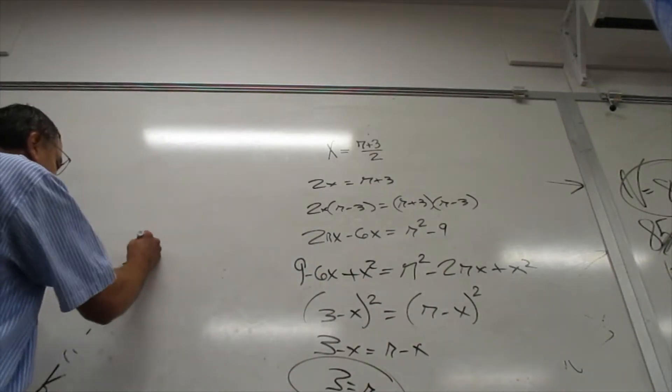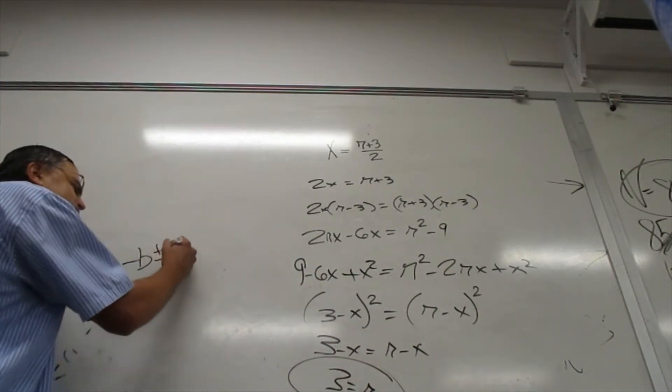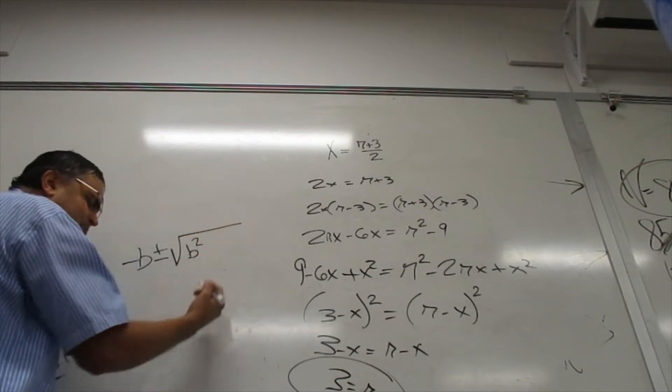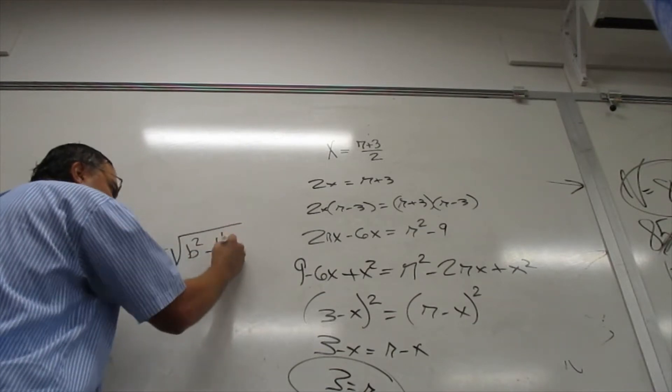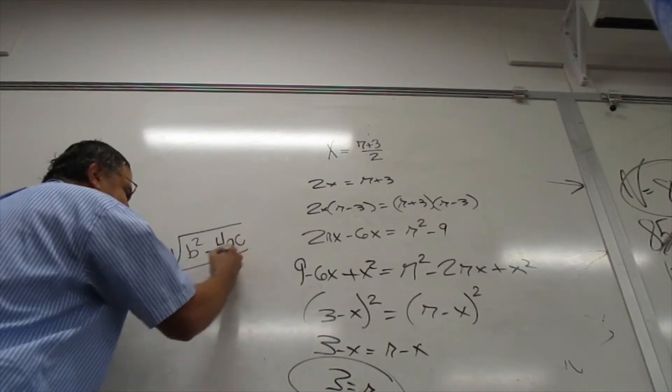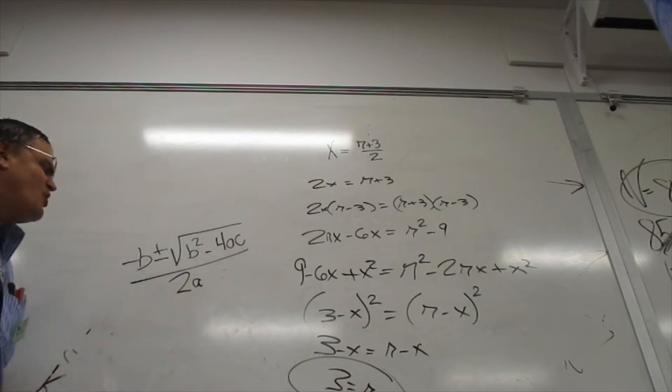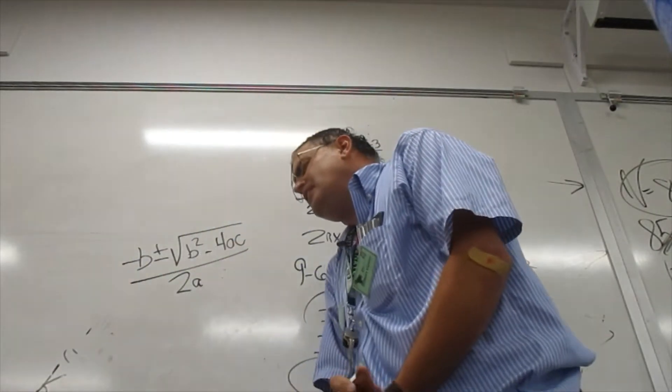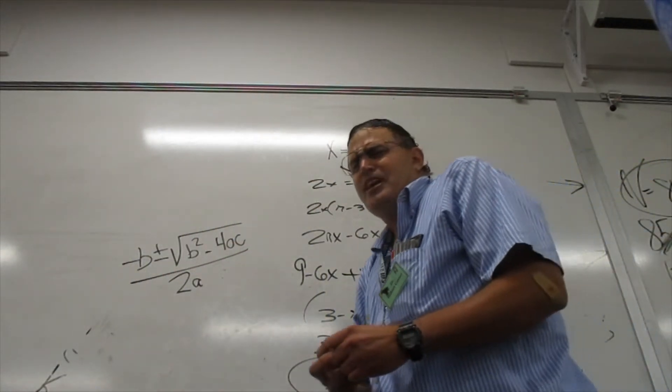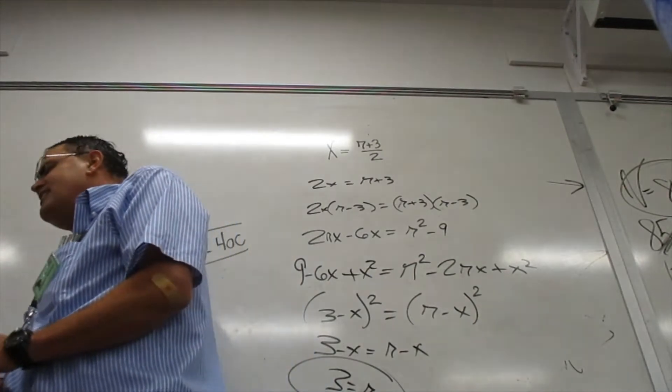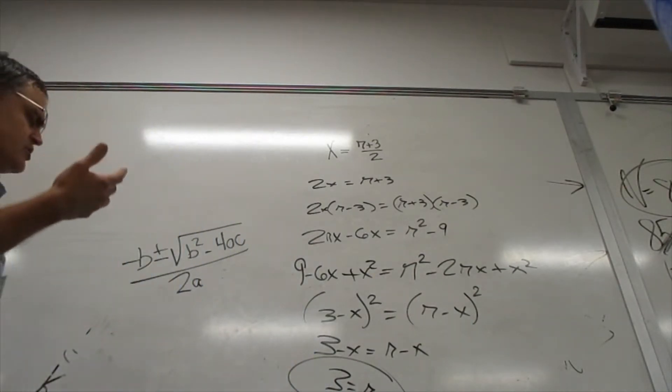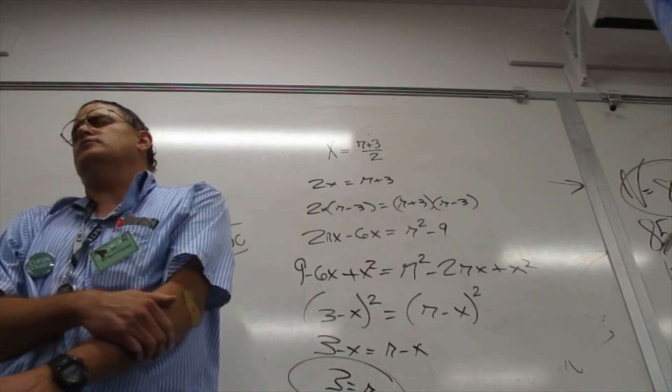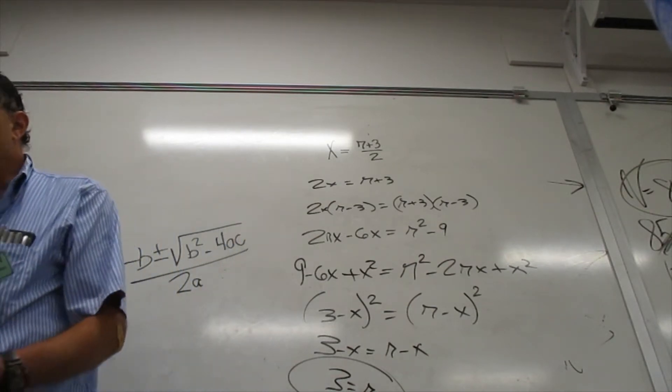Negative b plus or minus the square root of b squared minus 4ac all over 2a there. Simplify. Factor out the time and multiply. Plug the answer in and verify. Oh algebra. You terrify.